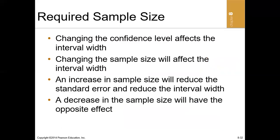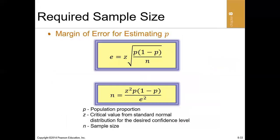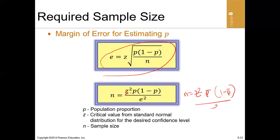What if we don't know the required sample size for a proportion? By making n the subject of the confidence interval formula, the sample size formula becomes: n equals the critical value squared, multiplied by p(1 minus p), all over the margin of error squared, e squared. When we don't have the population proportion, we use the sample proportion in its place.